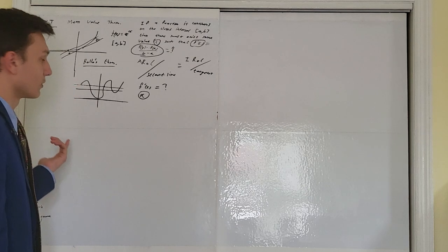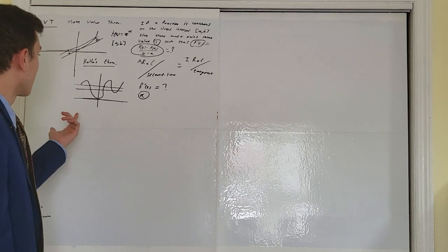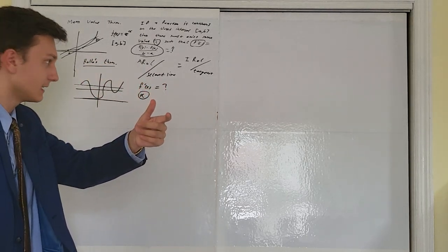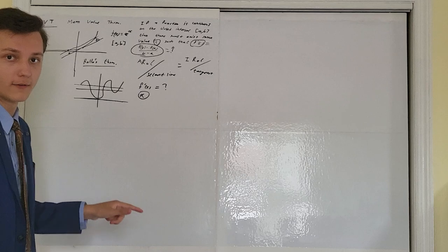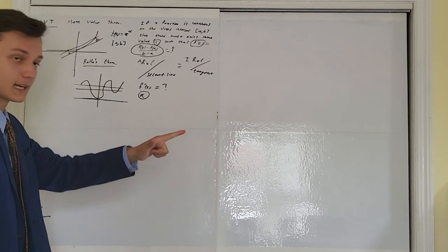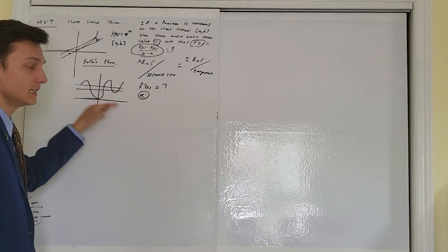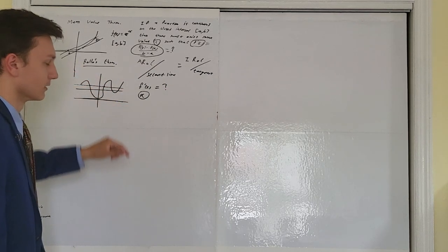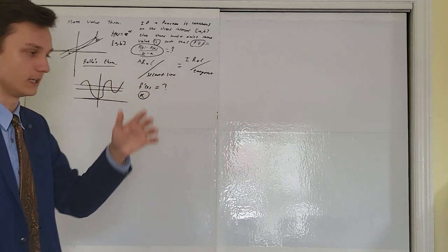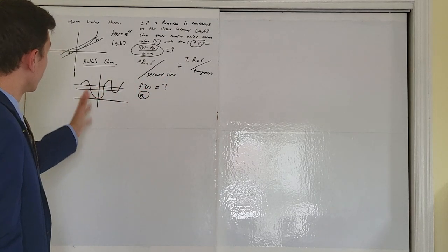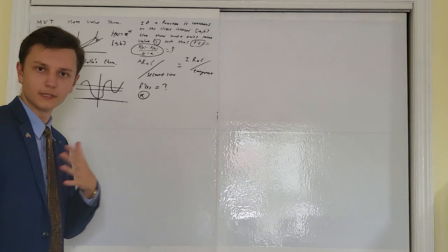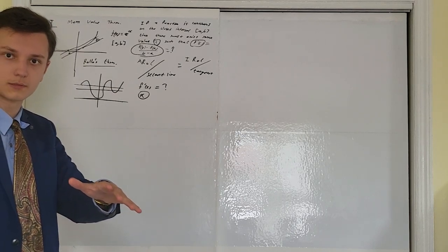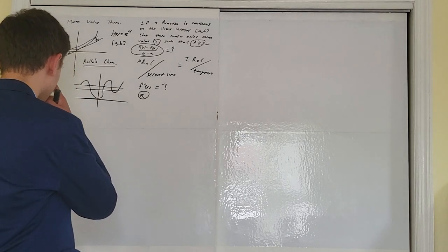You don't need to memorize the names or Rolle's Theorem as a separate theorem. It's just important to know instantly that if two points are at the same y-value, the average rate of change is zero, and the derivative must equal zero at at least one x-value between those two points A to B. That's the MVT — pretty simple. Ten problems would probably be enough practice.